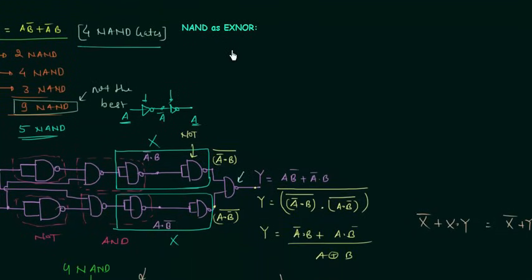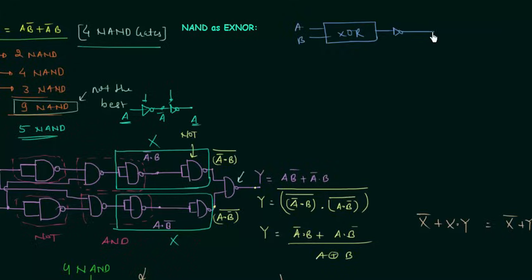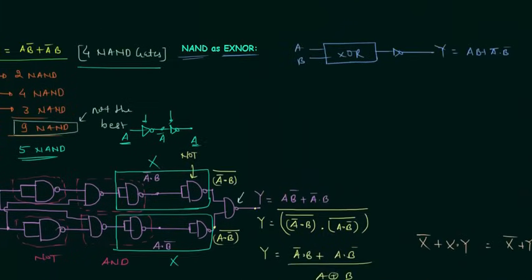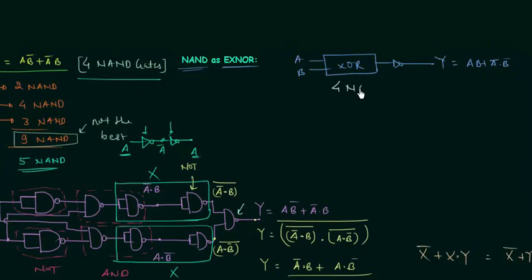Now we will move to XNOR implementation using the NAND gate. To obtain XNOR we complement the output of the XOR gate. If A and B are the two inputs, output Y equals A and B or A complement and B complement. Implementation is simple: make the XOR gate using 4 NAND gates, then add 1 NAND gate as an inverter to complement the output. So 4 plus 1 equals 5 NAND gates are required to implement the XNOR gate.